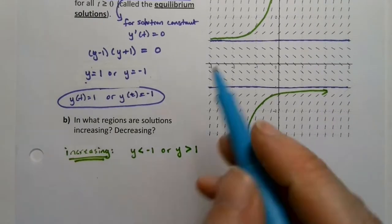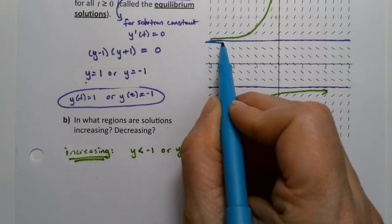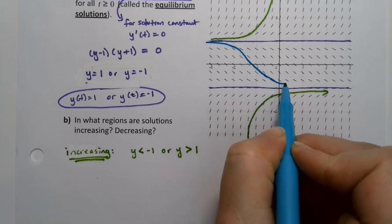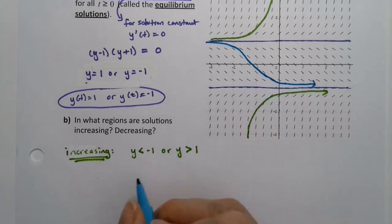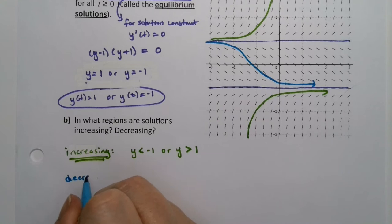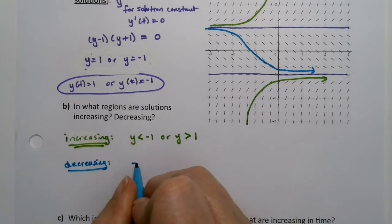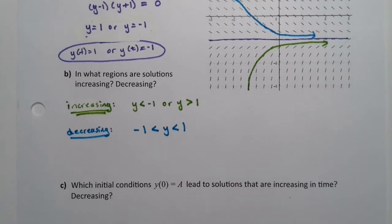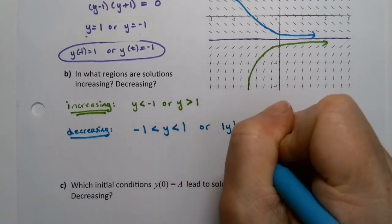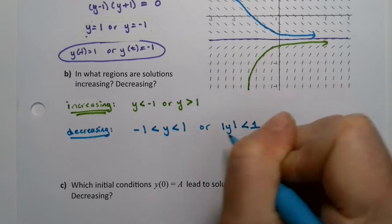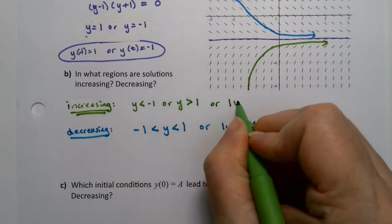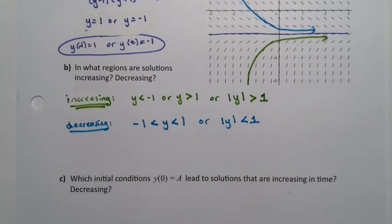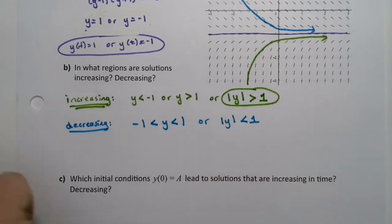Decreasing happens in the middle. So it looks like this. It's coming through and then follows those parking lot lines and came out like that. That's decreasing. Decreasing occurs when -1 < y < 1. In other words, |y| < 1. And this one would be |y| > 1, which is a quicker, easier way to write this.